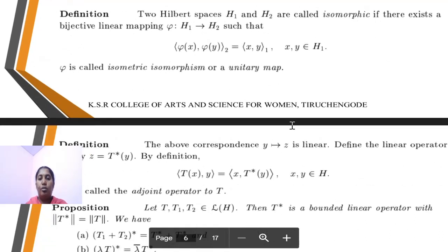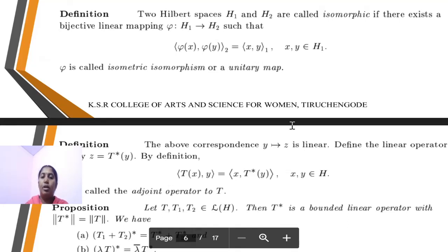Last definition: Isomorphic. Two Hilbert spaces H₁ and H₂ are isomorphic if there exists a bijective linear mapping π such that π: H₁ → H₂, satisfying ⟨π(h), π(y)⟩₂ = ⟨h, y⟩₁ for h, y belonging to H₁. π is called an isometric isomorphism or unitary map.